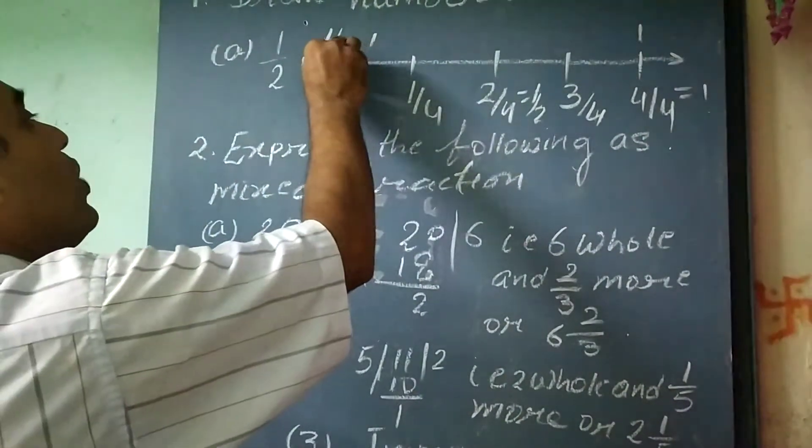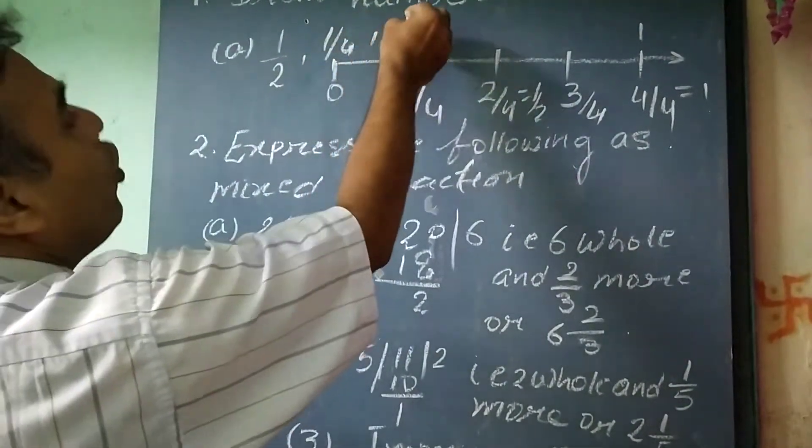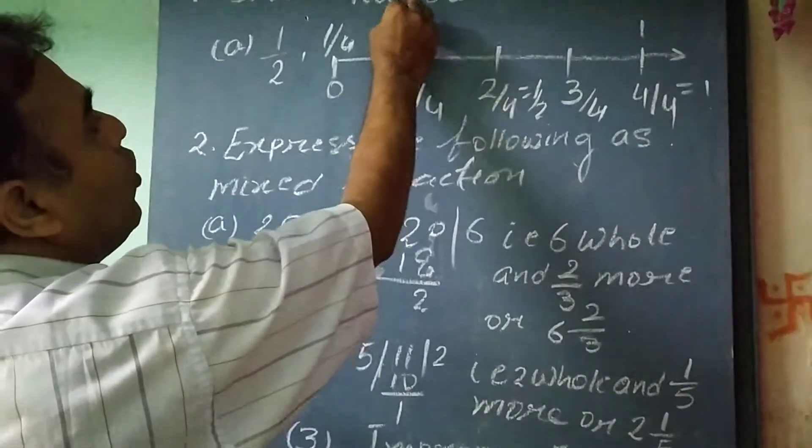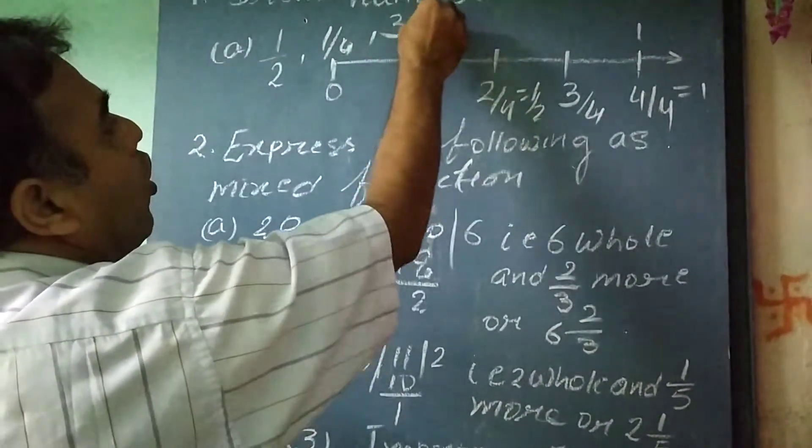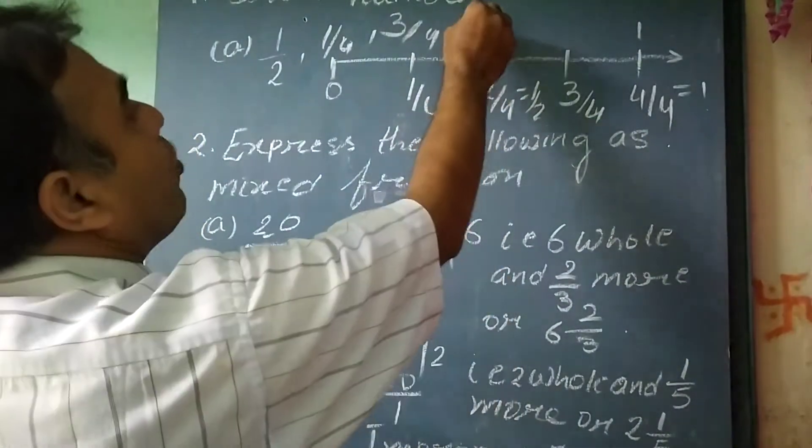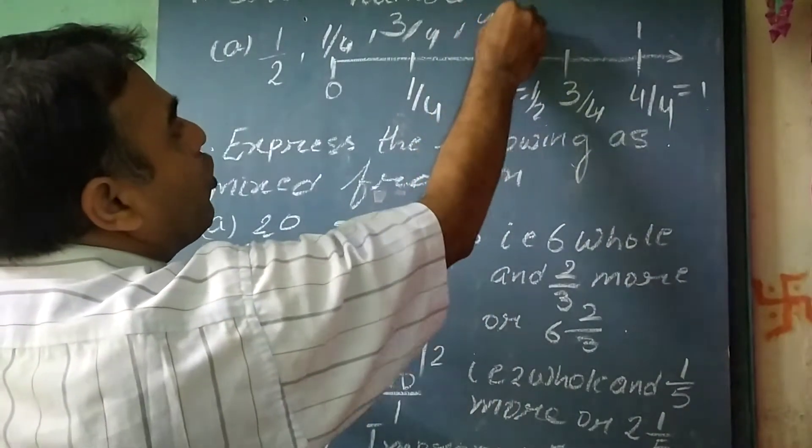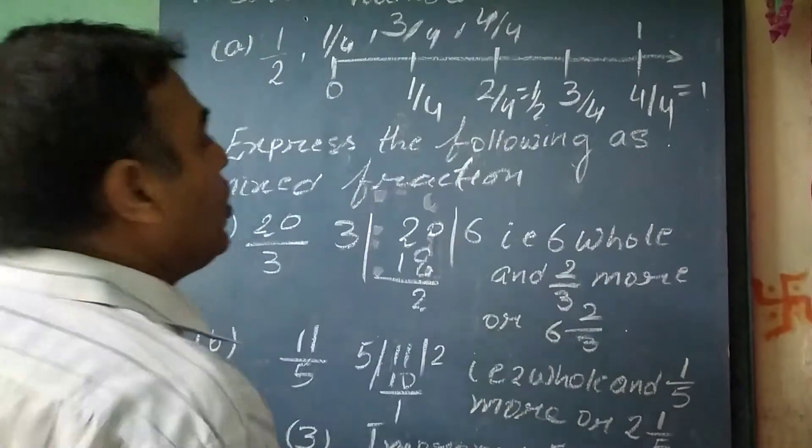So, in this way, we can locate the points 1/2, 1/4, 3/4, and 4/4 on the number line. Now, express the following as mixed fractions.